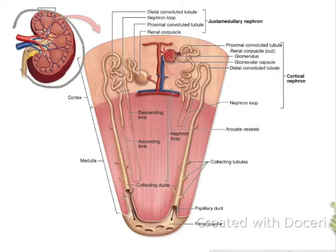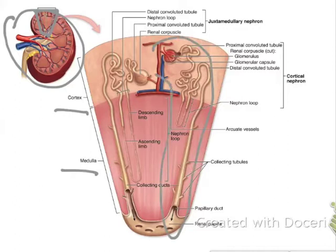So here is the kidney, and you can see we've zoomed in right there. We're looking at the cortex and the medulla. This whole area is a nephron, and you can see right here in red, that's where the glomerulus is. It's essentially a capillary bed where a lot of the plasma is filtered out of the capillaries and into the urine.